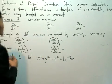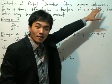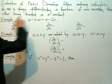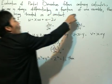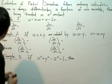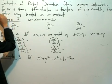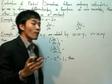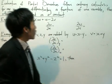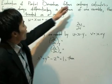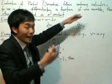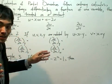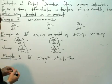The evaluation of partial derivatives follows ordinary calculus — it's kind of easy, just follows ordinary calculus with one exception: one is always differentiating a function of one variable, the other being treated as a constant. This is a key statement: the other being treated as a constant. When we're dealing with partial derivatives, we're essentially dealing with functions of more than one variable. So we apply ordinary calculus to one variable, and treat the other variables as constants. Let's go through some examples and see what we get.